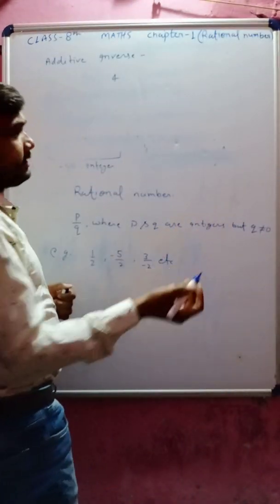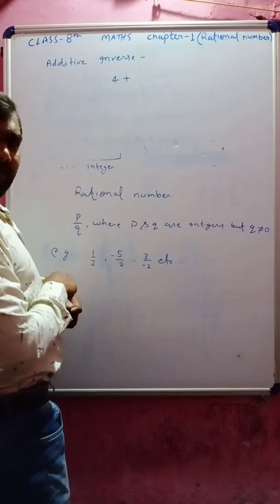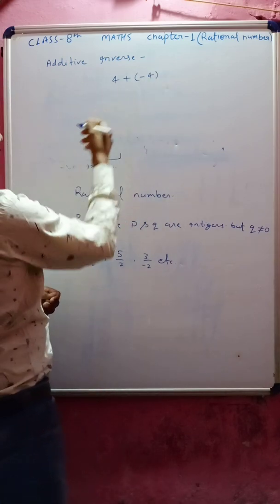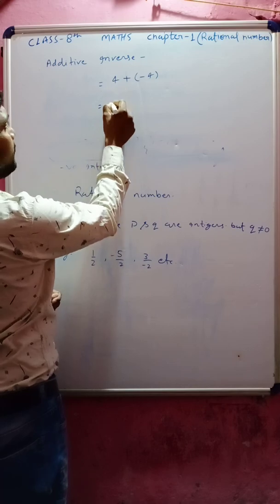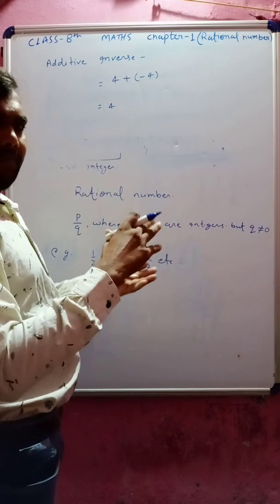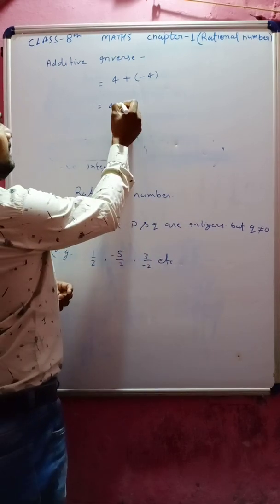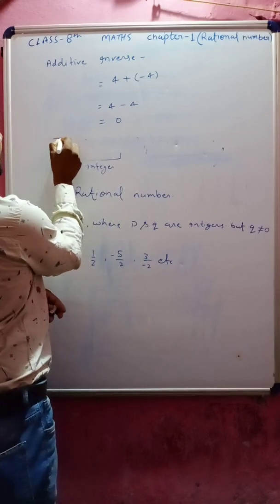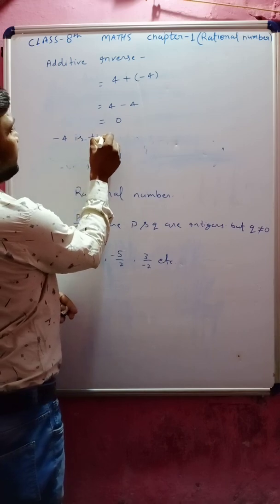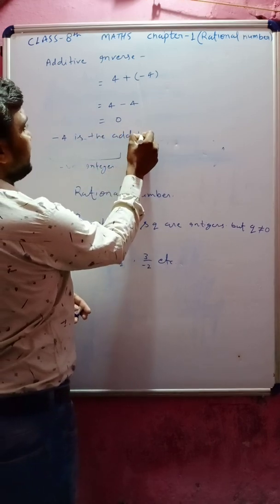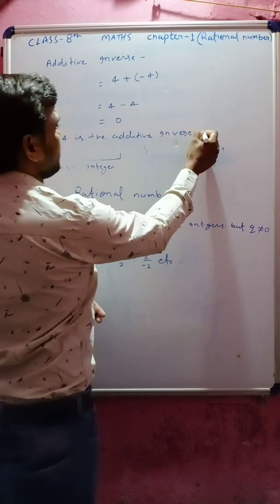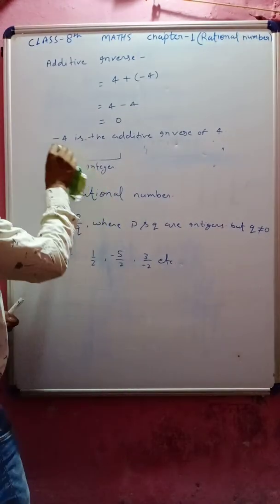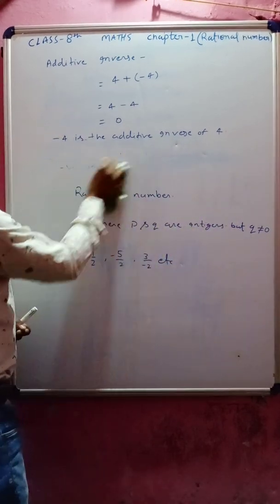It means minus 4 is the additive inverse of plus 4. Additive inverse is very easy — for any number, just change the sign and that becomes the additive inverse. For example: the additive inverse of minus 5 is plus 5, because plus 5 and minus 5 equals 0. Minus 100: its additive inverse is plus 100, because plus 100 and minus 100 becomes 0.